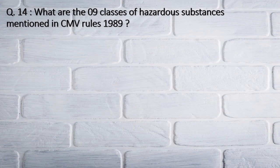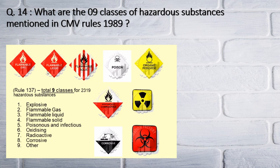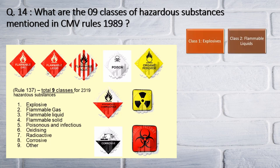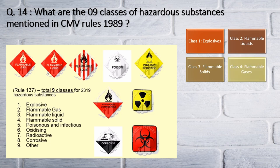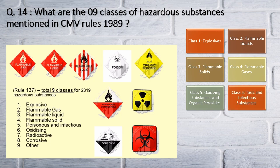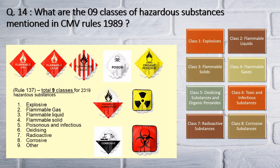Question number 14: What are the 9 classes of hazardous substances mentioned in the Central Motor Vehicle Rules 1989? As per Central Motor Vehicle Rules 1989, when transporting hazardous or dangerous goods, the following class diagrams must be displayed on the transportation vehicle: 1st — explosives; 2nd — flammable liquids; 3rd — flammable solids; 4th — flammable gases; 5th — oxidizing substances or organic peroxide; 6th — toxic and infectious substances; 7th — radioactive substances; 8th — corrosive substances; 9th — miscellaneous hazardous substances. These pictograms are used to display on transportation vehicles.